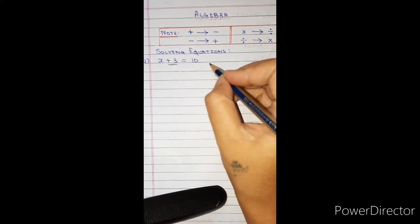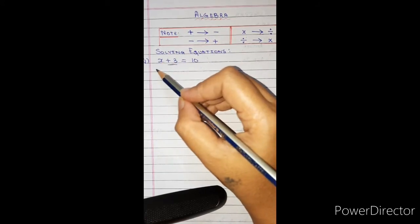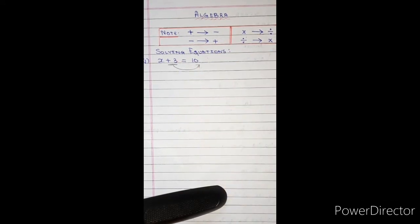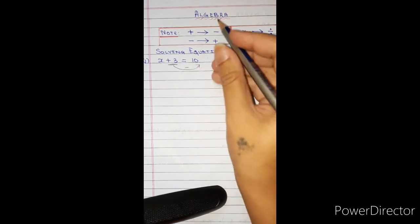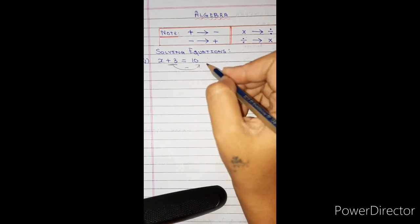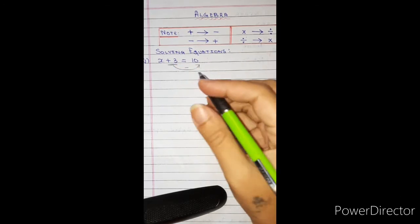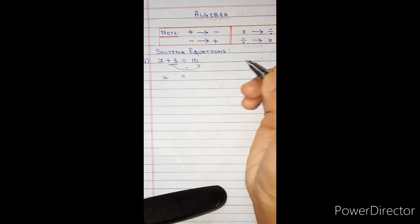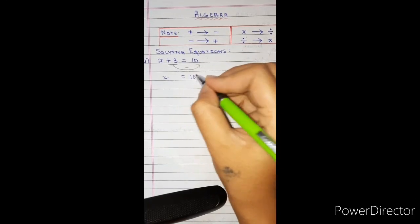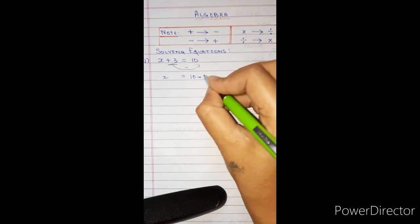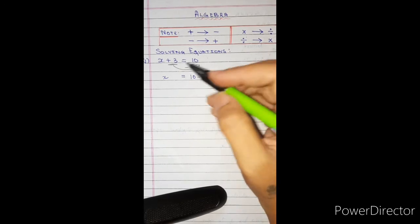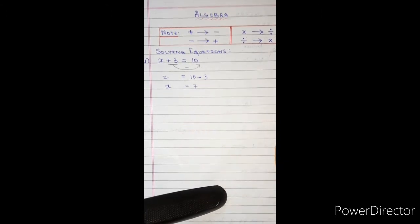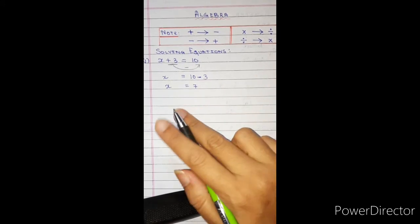We will move plus 3 from the left hand side to the right hand side. When it moves, plus 3 becomes minus 3. So we have x = 10 minus 3. Only the sign changes; the number remains the same. 10 minus 3 is 7, so x is equal to 7.